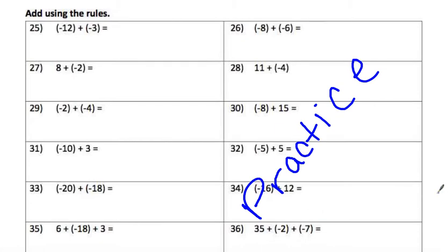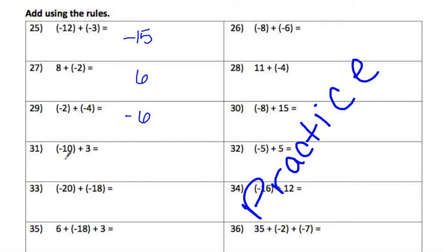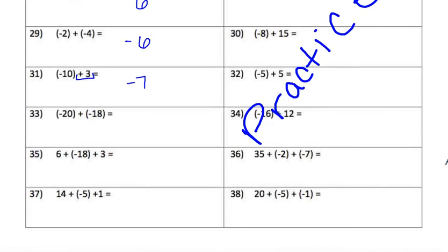For the problems at the bottom, use the rules. Number 25: same sign, simply add — 12 plus 3 is 15, keep the sign: negative 15. Number 27: different signs, find the difference — 8 minus 2 is 6, keep the sign of the larger absolute value which is 8, so positive 6. Number 29: same signs, add — 4 plus 2 is 6, stays negative. Number 31: negative 10 and positive 3 — different signs, find difference: 10 minus 3 is 7, keep the sign of 10, so negative 7. You try 33, 35, and 37 on your own. There are your three answers.